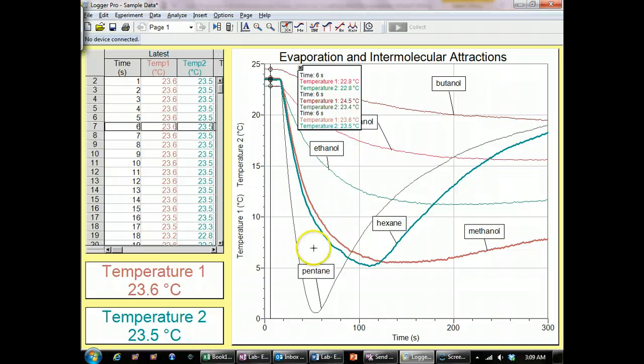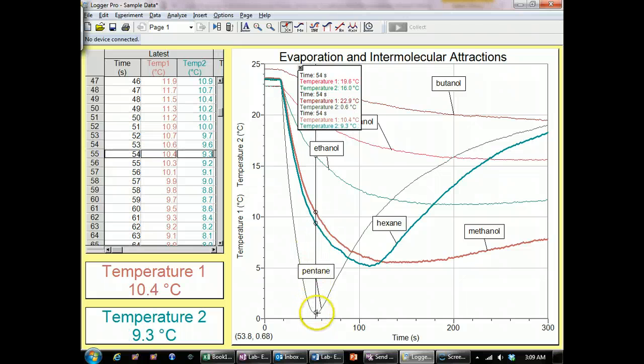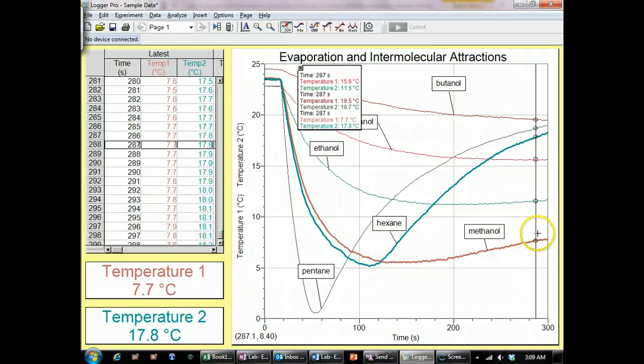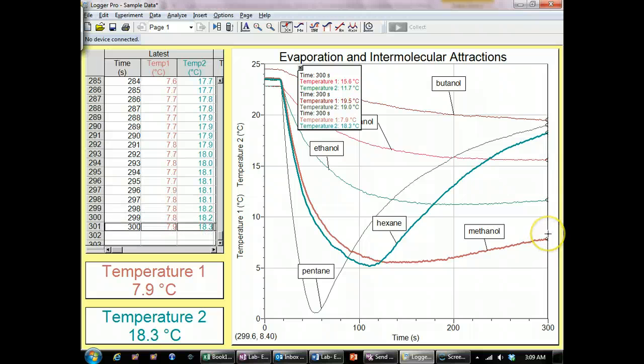And you can get the starting temperatures of all your chemicals. And if you want to go to pentane, for example, you want to make sure it's the lowest point of pentane at the bottom, not at the end. So if you notice pentane, hexane, and methanol, you're going to go by the lowest point and not the end point.